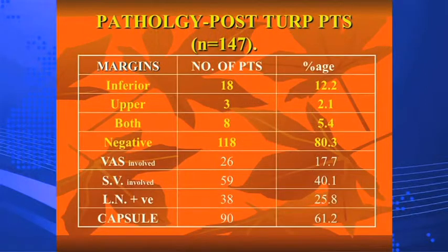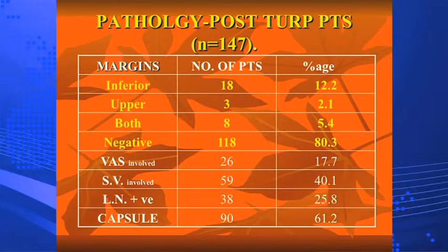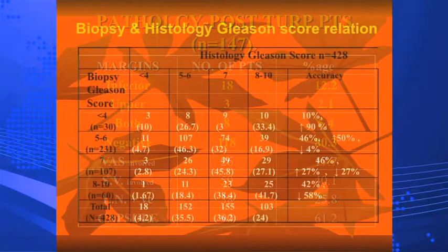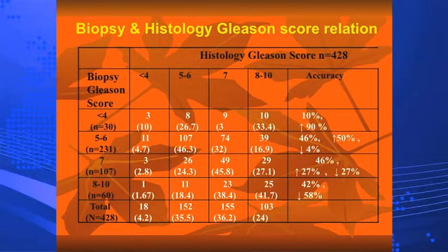Negative margins were achieved in only 118 patients — about 80%. A significant number of patients had a prior TURP diagnosis before being sent for further management, and margins remained a problem. On histology and Gleason score correlation: for biopsy Gleason score of 5–6, only 46% truly correlated with pathological Gleason of 5–6. The remaining patients were either upgraded or significantly higher on final pathology.